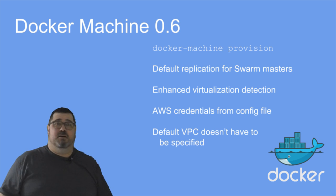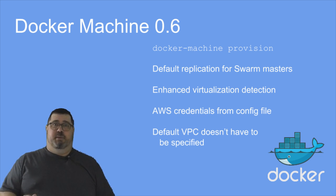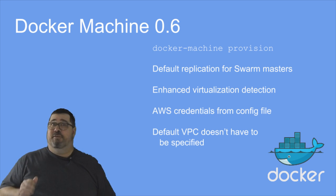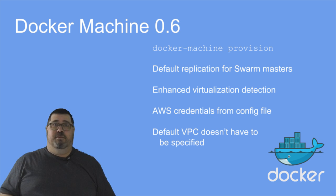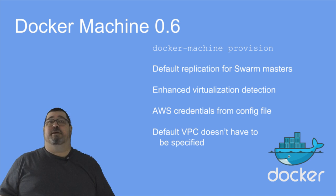Last, let's talk about Docker Machine. We've added some new features to make using Docker Machine even easier. In particular, we've added a Docker Machine provision command to rerun provisioning on hosts where it has failed or the configuration has drifted. Swarm masters are now created with replication enabled by default, and we have enhanced virtualization detection. Also, AWS credentials can now be automatically read from the config file, and a default VPC is chosen when one is not specified explicitly.